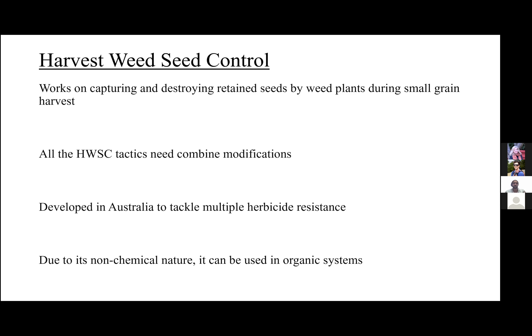There are six different harvest weed seed control tactics: chaff cart, narrow windrow burning, bale direct, chaff lining, impact mill, and chaff drum lining. This technology was developed in Australia initially to tackle multiple herbicide-resistant weeds. While herbicide resistance isn't a problem in organic farming systems, due to its ability to control weeds non-chemically, it can be used in organic systems as well, as an addition to the organic farmer's toolbox for integrated weed management.